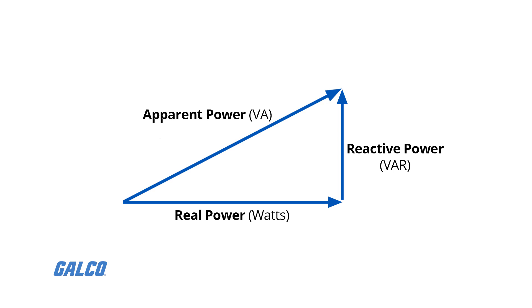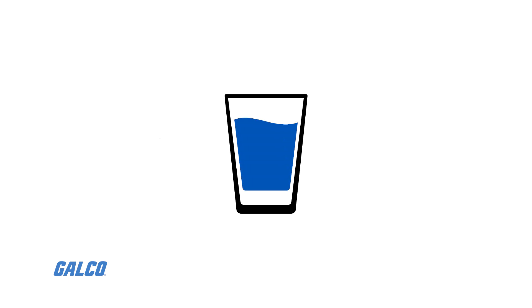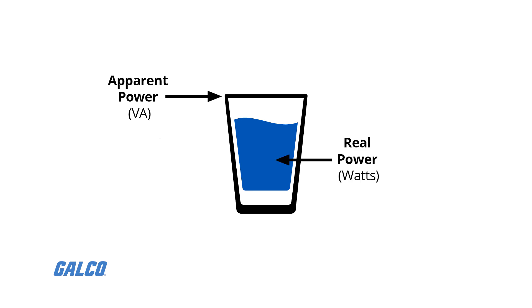To put it simply, you can visualize UPS power capacity as the amount of liquid in a glass. The top of the glass represents the limit of apparent power that the UPS will accept, as measured in volt amps. The liquid in the glass represents the real power of your UPS, measured in watts.